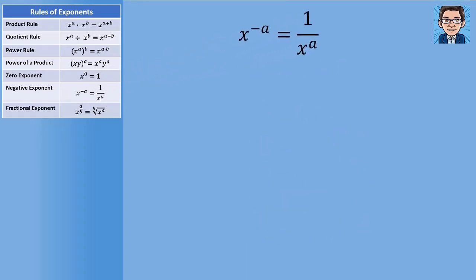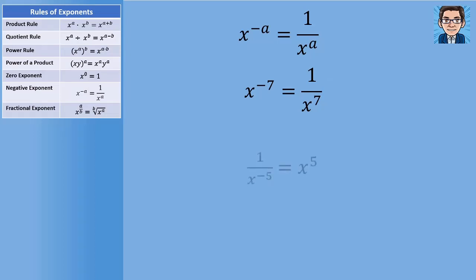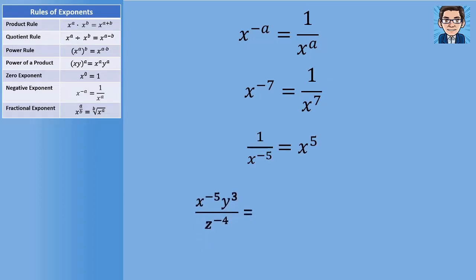The next rule addresses negative exponents. If something's to a negative exponent, it's the same as one over that same thing to a positive exponent. So x to the negative 7th is the same as one over x to the positive 7th. One over x to the negative 5th is the same as x to the positive 5th. This comes in handy for simplifying expressions — we can move x to the negative 5th from the numerator to the denominator and have it become positive 5. Same thing with z: move it from the denominator to the numerator and it becomes positive 4 instead of negative 4.